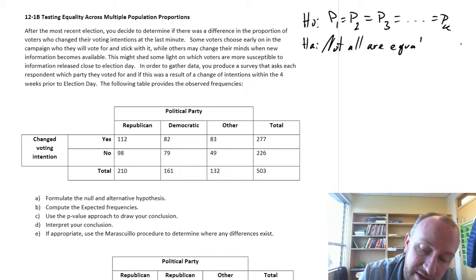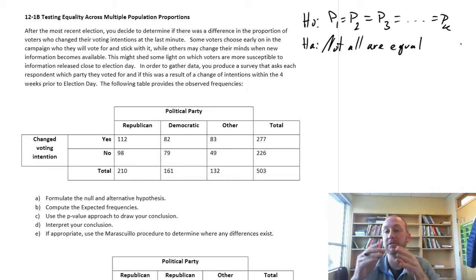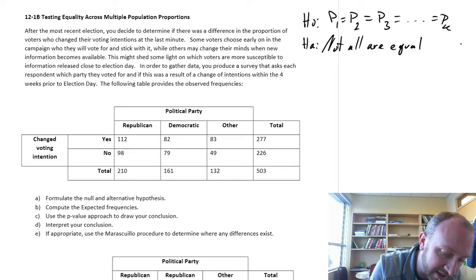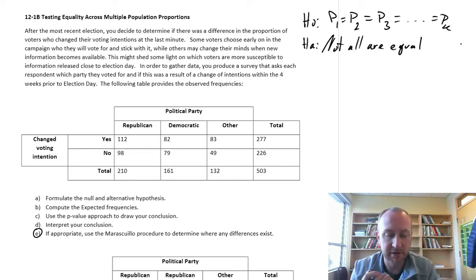So all this implies is that if we reject the null hypothesis, it means at least one of them is different. And if that's the case, then we have a procedure, as we'll see in Part E, a Marascuilo procedure to identify where a difference exists, if any.